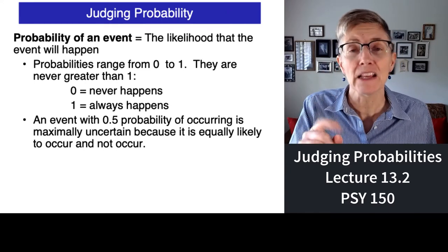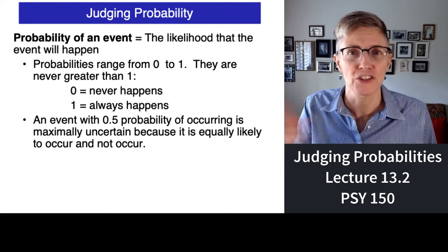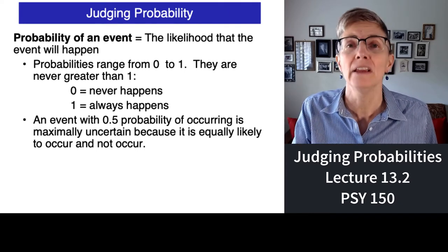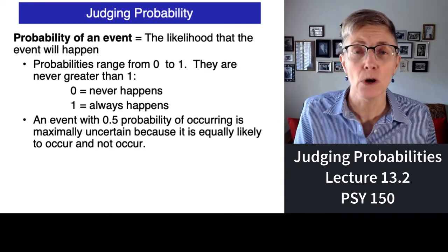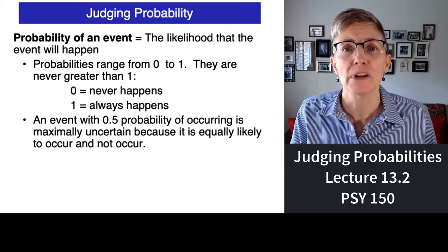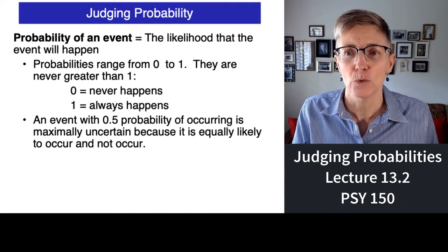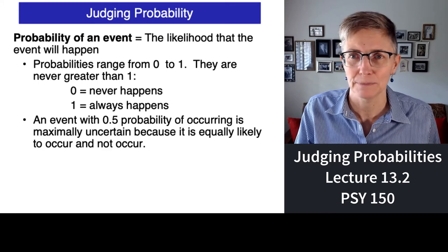If something has a probability of 1, then it's a certainty that it will happen. If something has a probability of 0, that's a certainty that the event or the thing you're talking about won't happen.